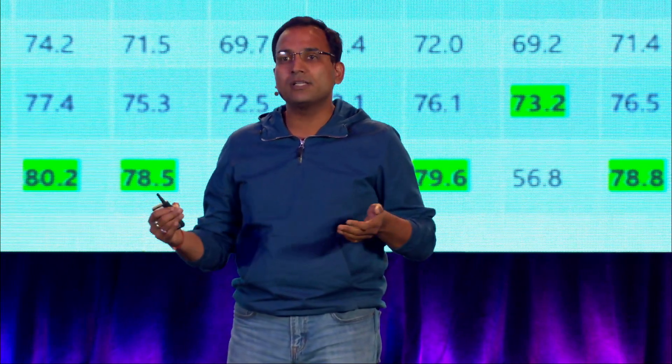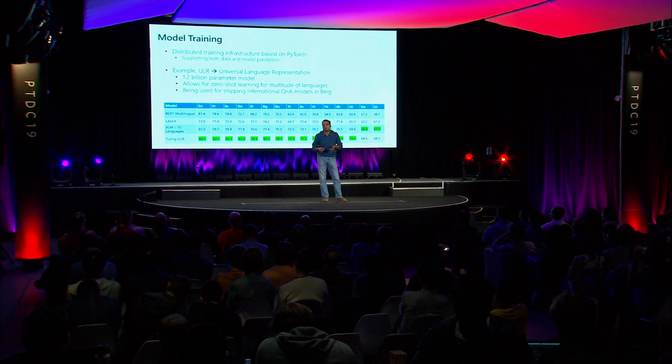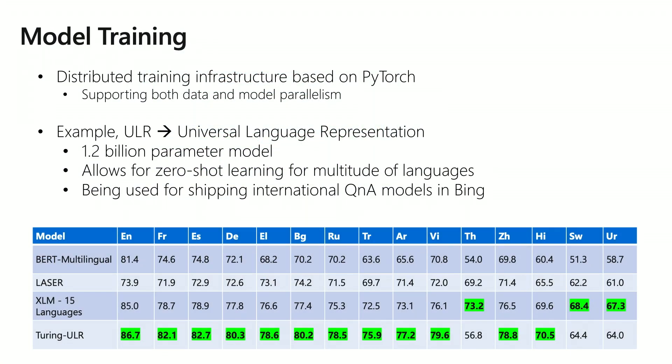In terms of model training, the size of models is becoming very interesting — that's one axis people definitely want to explore. That is leading us to have support for both data parallelism as well as model parallelism, since models are coming to a size where you cannot fit them into a single GPU. Here is an example: this is an internal model — Turing and ULR are internal project names, this has nothing to do with Turing from NVIDIA. ULR stands for Universal Language Representation; this is a 1.2 billion parameter model.